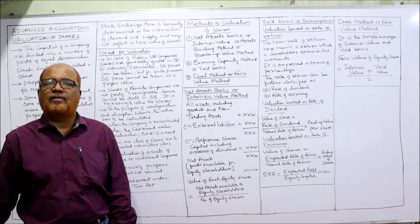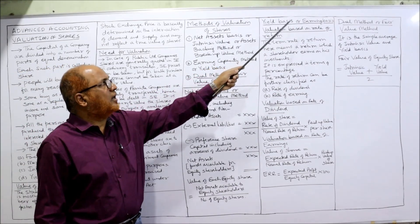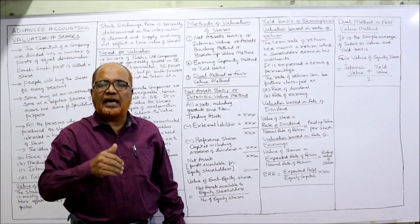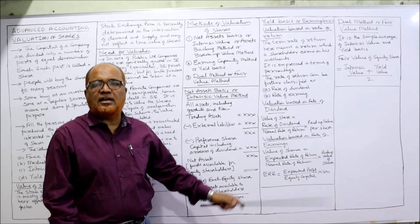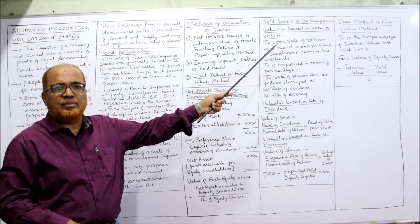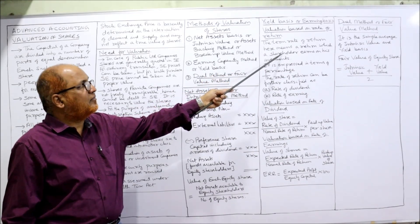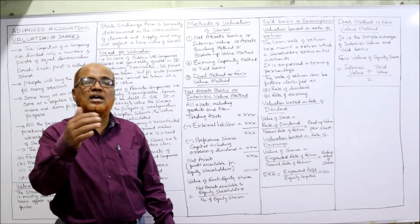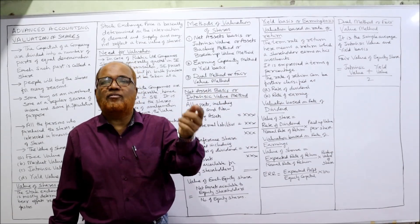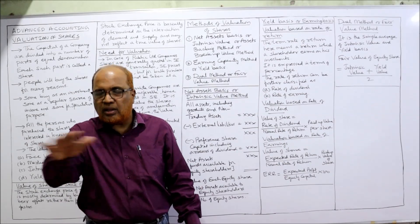The second method is the yield basis or earning basis valuation. According to this method we find the value of shares based on return. There are two sub-methods: valuation based on rate of return and valuation based on rate of earnings. Return means the return which a shareholder earns on investment — in the form of interest, dividend, or rent — but for shares, the return is in the form of dividend.